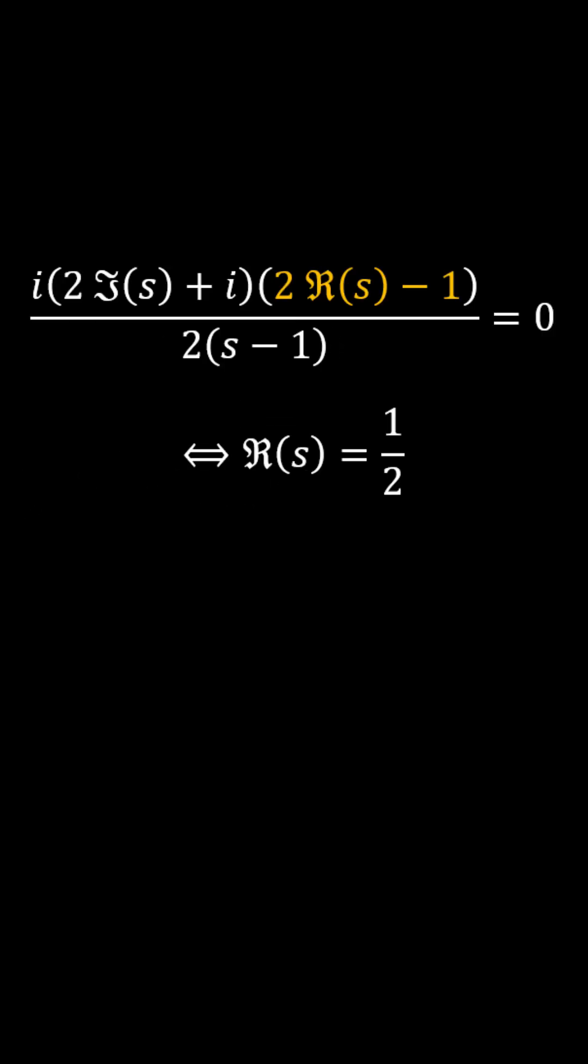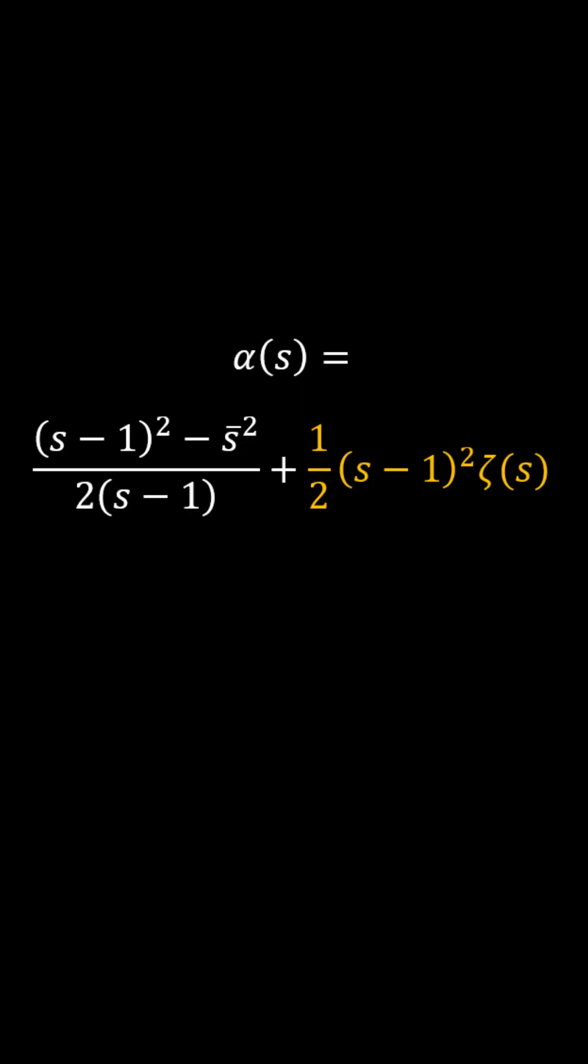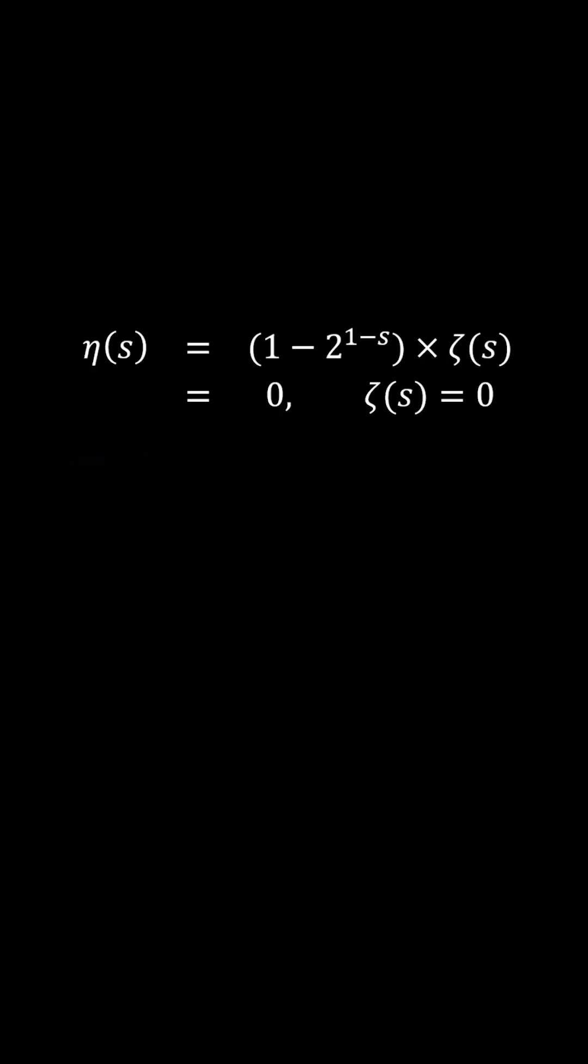This is because the numerator implies one half when set to zero, and the second term is only zero within the critical strip, as anything times zero is zero.